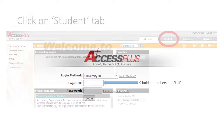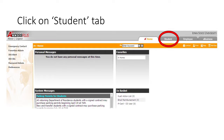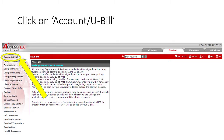After you log into Access Plus, click the Student tab on the right side of the screen. On the left side of the screen, you will then be able to see a list of all of the things that you can do on Access Plus. For example, you can schedule a meeting with your advisor by clicking the ISU Appointments tab.